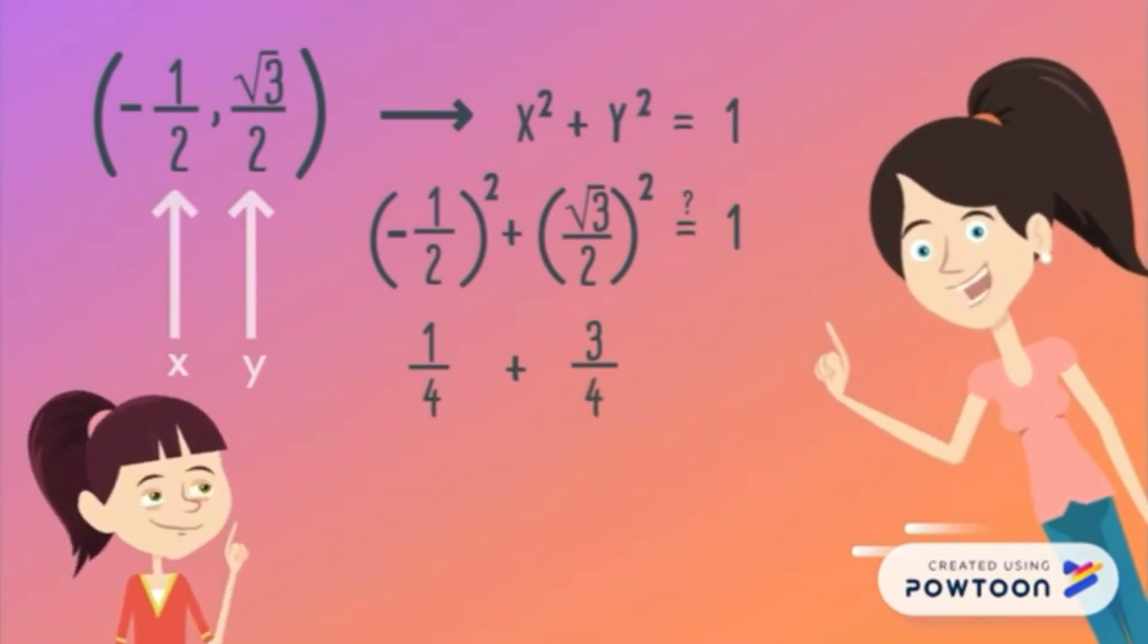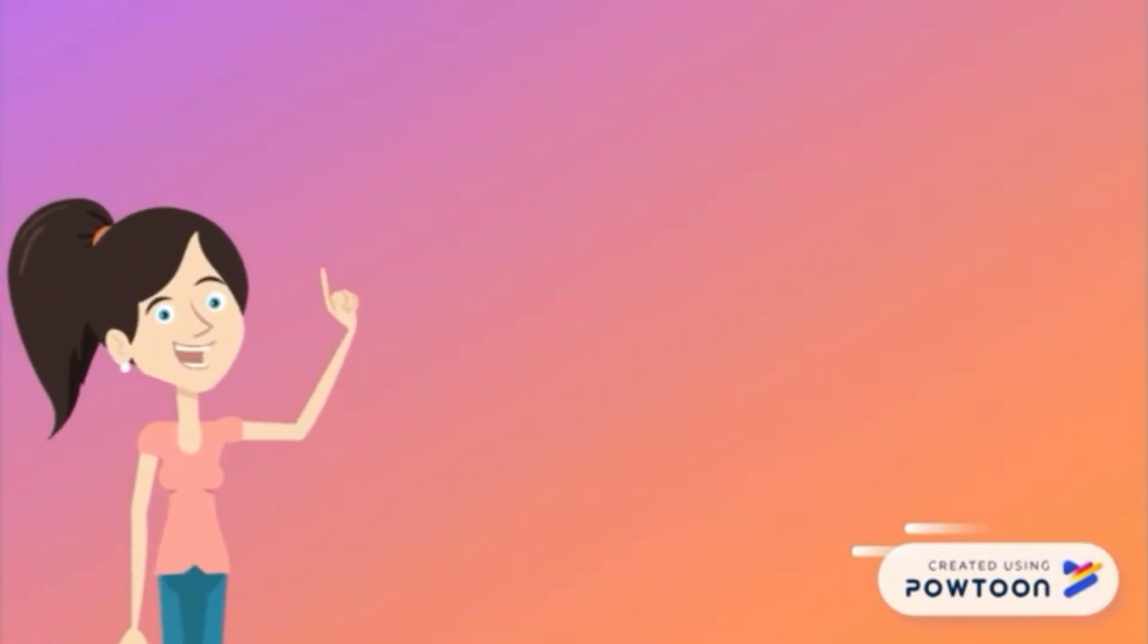Now let's add. Since they both have the same denominators, all we have to do is copy the denominator and add the numerators. And there we have our answer: 1 equals 1. Therefore, the point negative 1 half and square root of 3 over 2 lies on the unit circle.